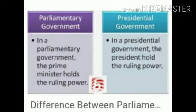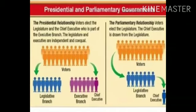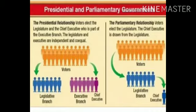Second, the head of government in the parliamentary system is usually known as the prime minister, while in the presidential system the president is the head of government. Third, the prime minister is the leader of the majority party, while the president is generally directly elected by the people. Fourth, the prime minister is accountable to the legislature, whereas the president is not accountable to the legislature.